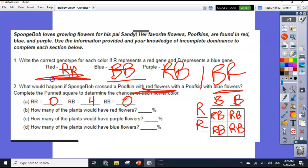So how many would have red flowers? So red is big R, big R. How many are big R, big R? Zero. How many have purple flowers? Four of them. Four out of four, which is 100%. And how many have blue? Would be zero.